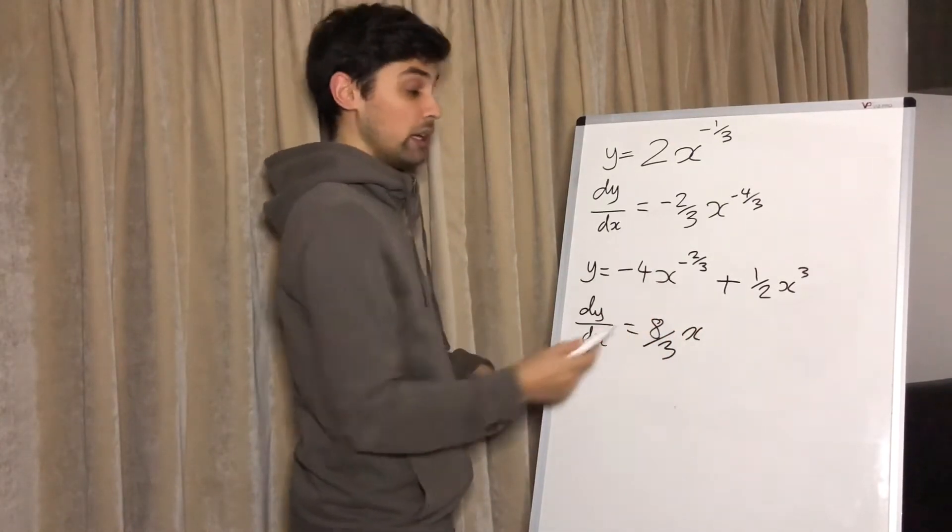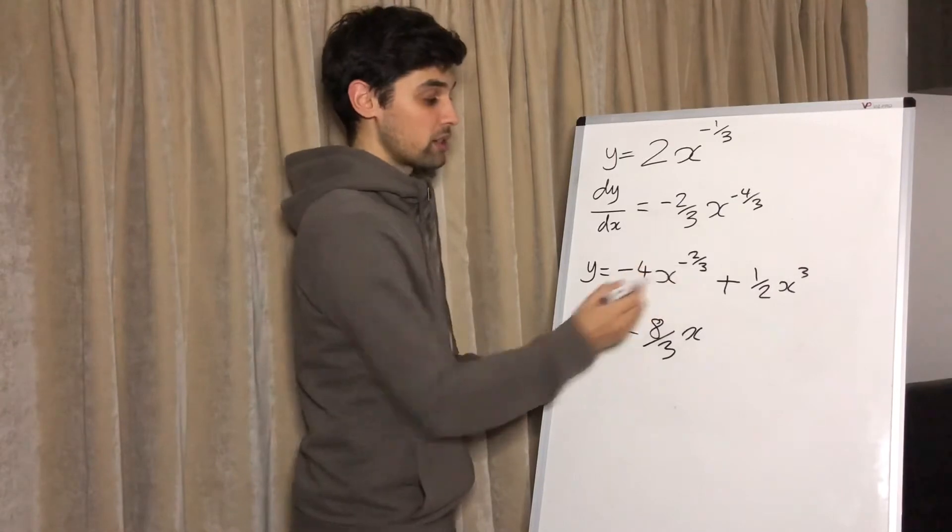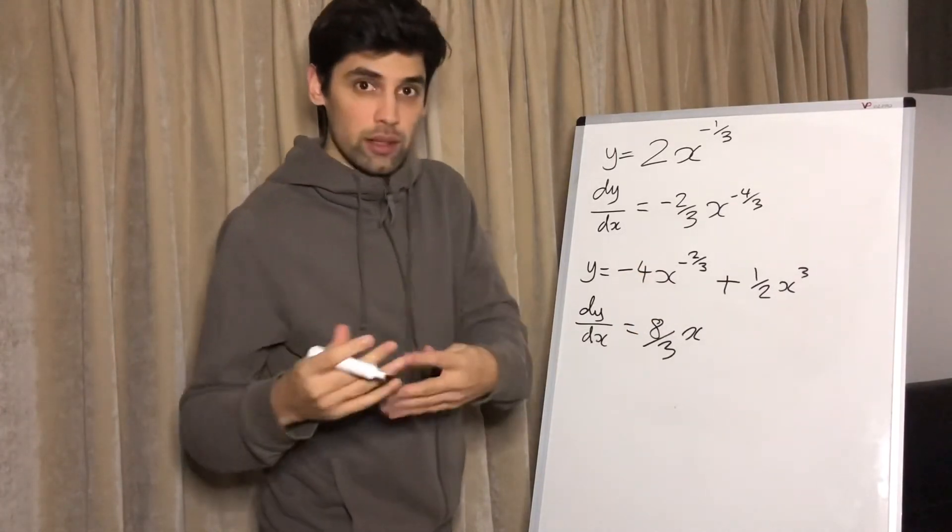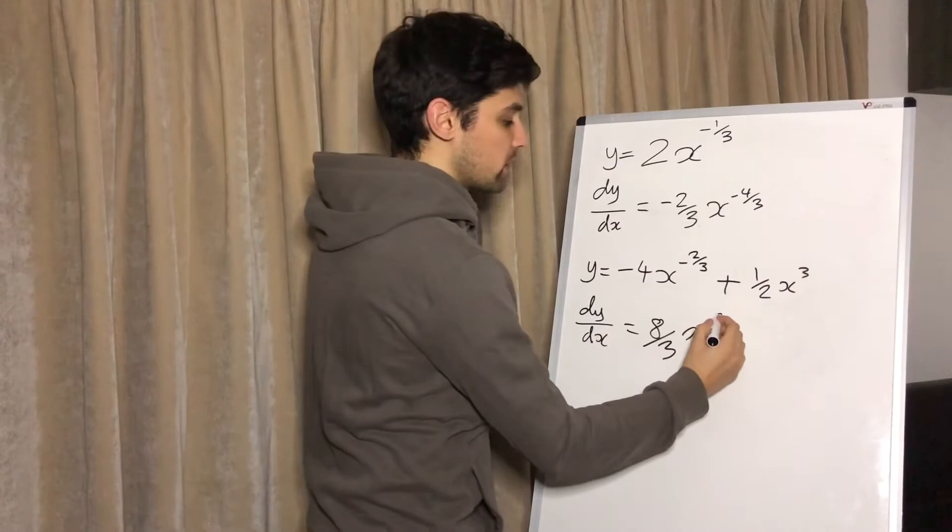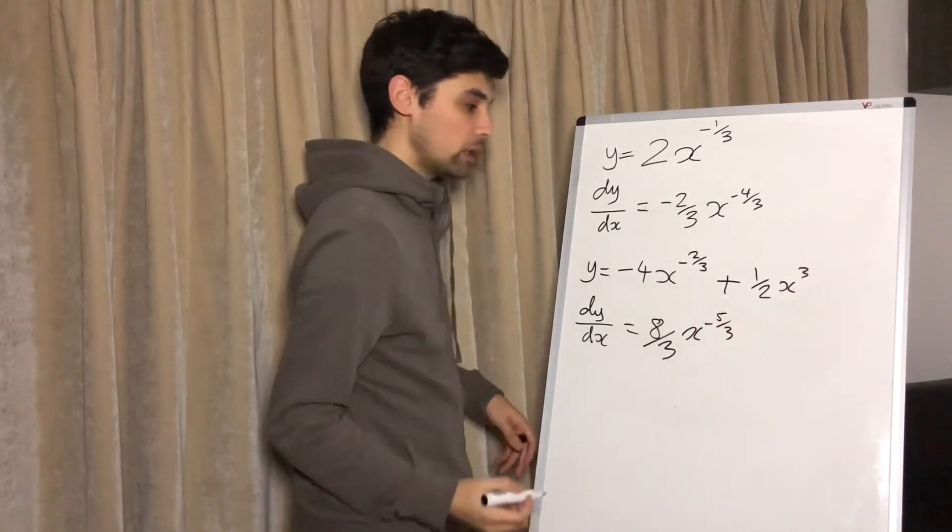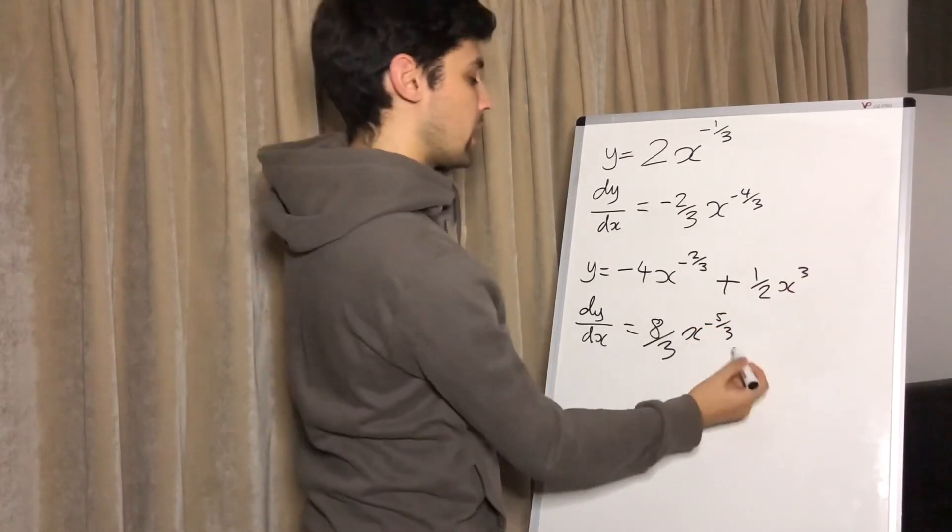Another way of looking at it: because this is in thirds, we could say minus three thirds, because that is one, to create minus five thirds as the power. And then three times a half is gonna be three over two X squared.